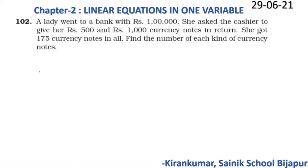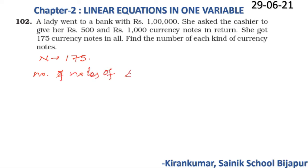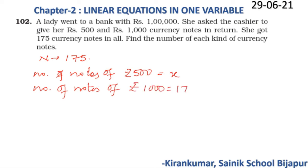Question 102: A lady went to a bank with ₹1 lakh. She asked the cashier to give her ₹500 and ₹1000 currency notes in return, and she got 175 currency notes in all. Find the number of each kind of currency note. Let the number of ₹500 notes be x; then the number of ₹1000 notes is (175 − x).